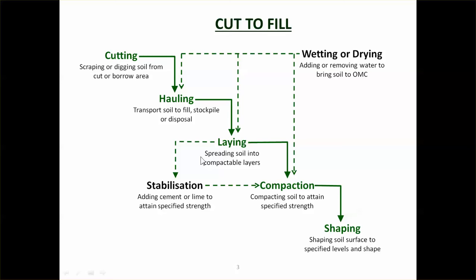The operations typically involved are: cutting out the material, hauling it and moving it to the new location, then laying it in layers. You normally lay it in layers of about 200 to 300 millimetres. Any thicker than that means you're not going to get proper compaction, and any thinner means you're wasting compactive effort. So you've got to spread it out into an even layer.